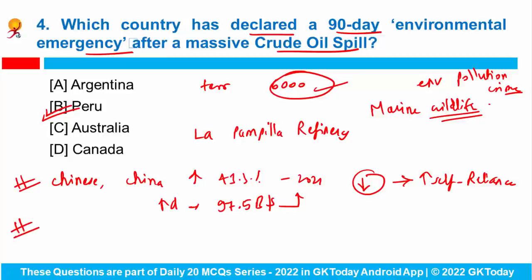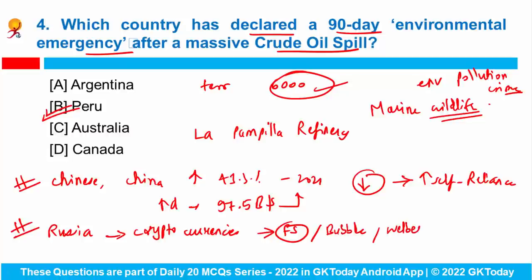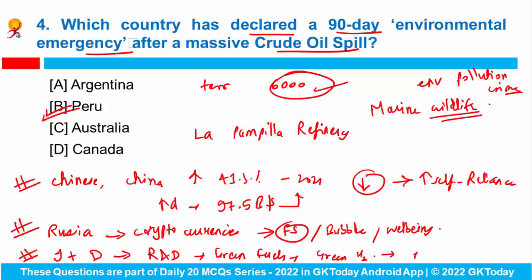The Central Bank of Russia has proposed to crack down on cryptocurrencies due to instability in the financial system, bubble formation concerns, and for the well-being of citizens. India and Denmark have agreed to initiate joint research and development on green fuels including green hydrogen, signed as part of the Green Strategic Partnership Action Plan 2022-2025.